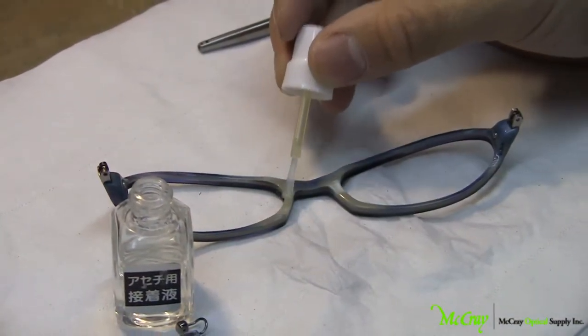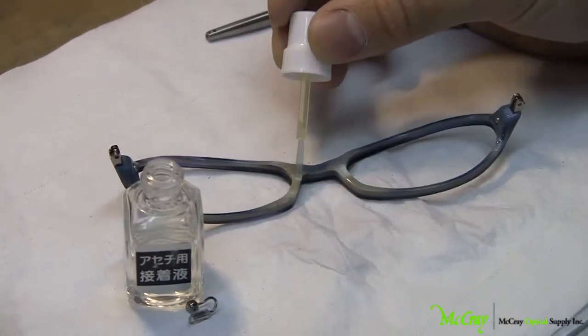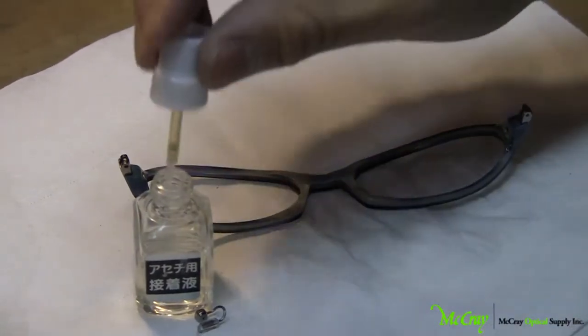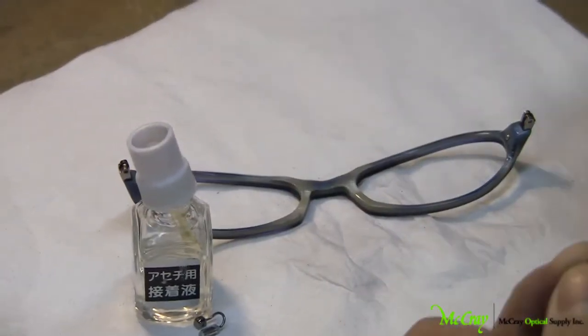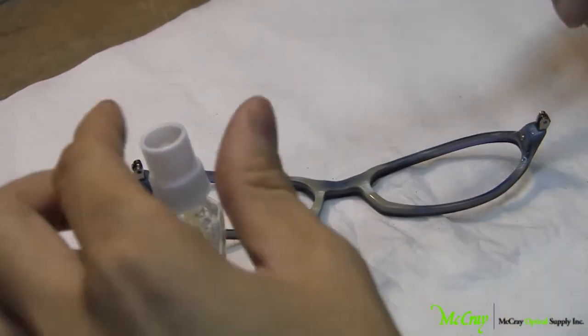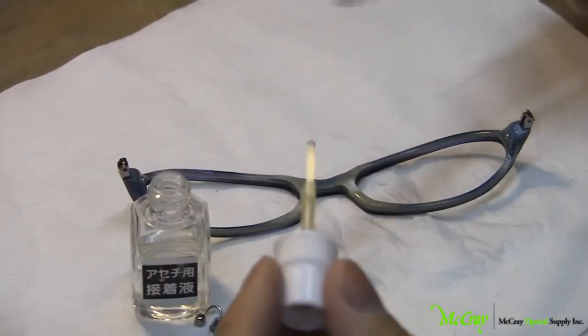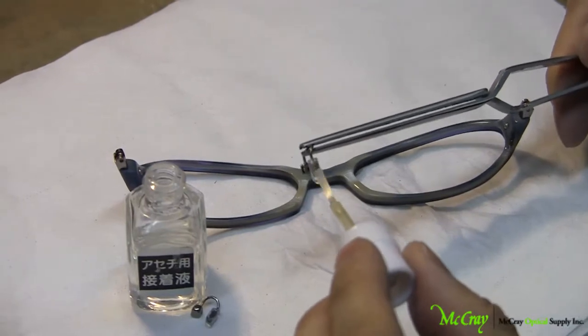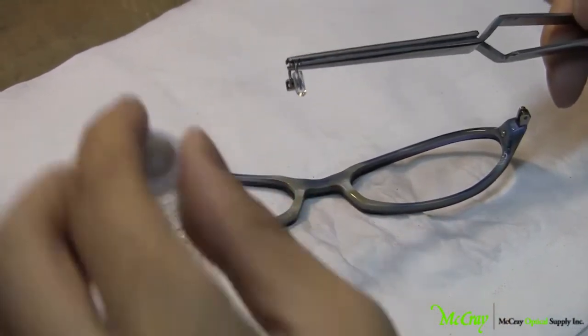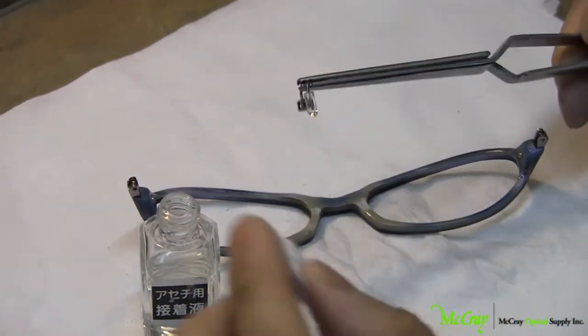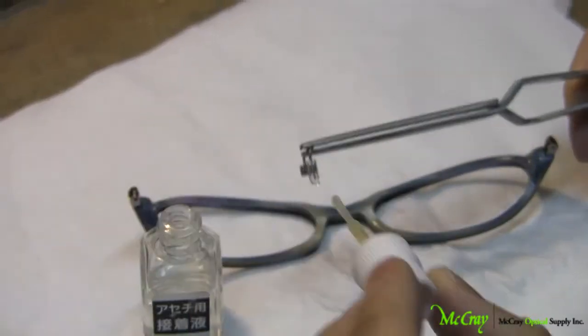This particular procedure will not work with optil frames. Again, optil frames is a different type of plastic, and the glue simply does not work with that type of material. Now, I'm going to apply the glue A to the titanium pad arm as well. And again, a generous amount.